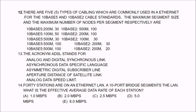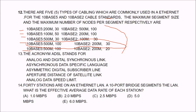Question 12: there are 5 types of cabling commonly used in Ethernet. For the 10Base5 and 10Base2 cable standards, the maximum segment size and maximum number of nodes per segment are respectively: 10Base5 means 500 meters with 100 nodes, and 10Base2 means 200 meters with 13 nodes. The answer is D and C.